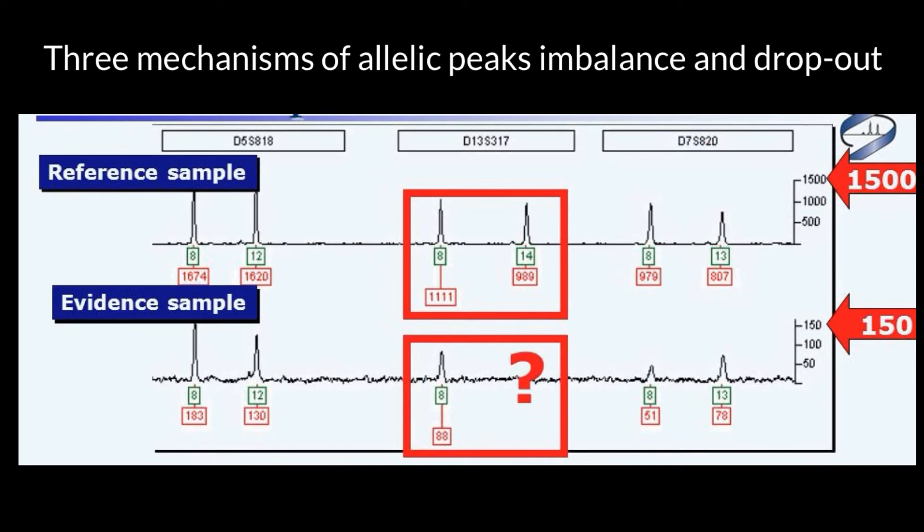But now we have to think whether we just have allele drop out here or this is a person who is homozygous at this locus. So this is going to be electropherograms of two different people.